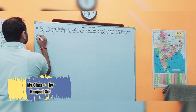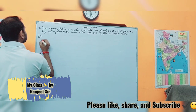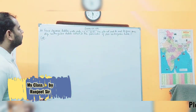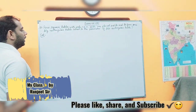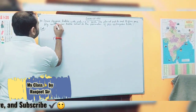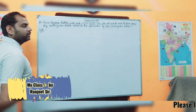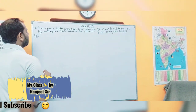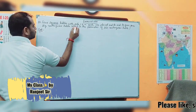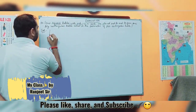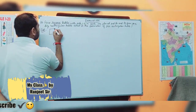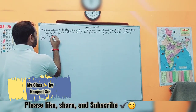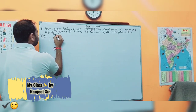This question requires us to think carefully. 4 square tables with side 1.2 meter — the square property is that length and breadth are equal, meaning all sides are equal. So each side is 1.2 meter.